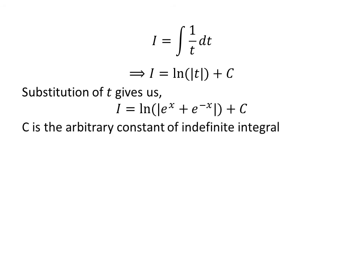Let us substitute t in terms of x. As we had assumed t is equal to exponential of x plus exponential of minus x, so i is equal to natural log of absolute value of exponential of x plus exponential of minus x plus capital C.